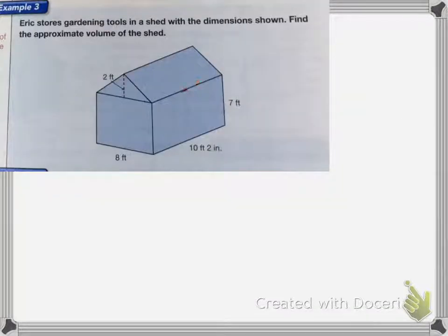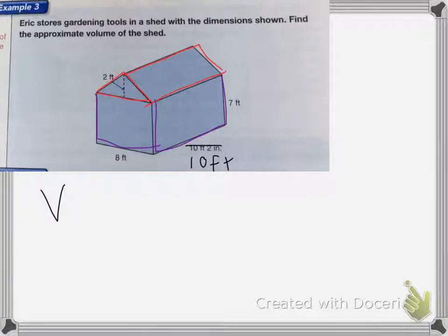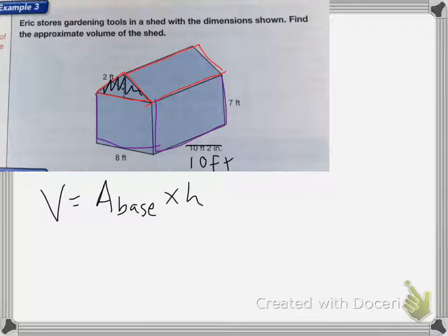With this last one I have a shed, and I need to find the approximate value. So that means I'm going to round 10 feet 2 inches to 10 feet. I need to find it in two parts — I'm going to find the volume of the triangular prism first, and then I'm going to find the volume of the rectangular prism. The volume of the triangular prism equals the area of the base times the height of the object, which is this long side here.